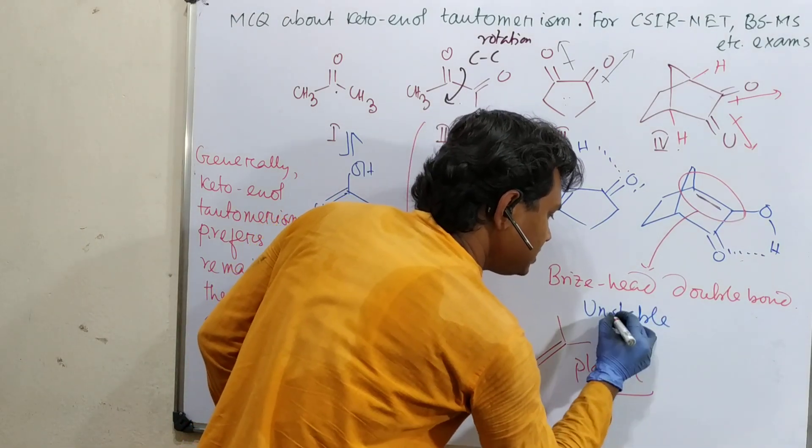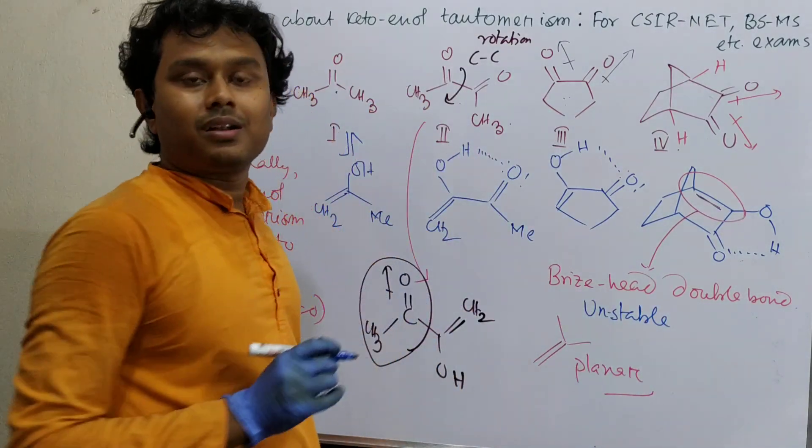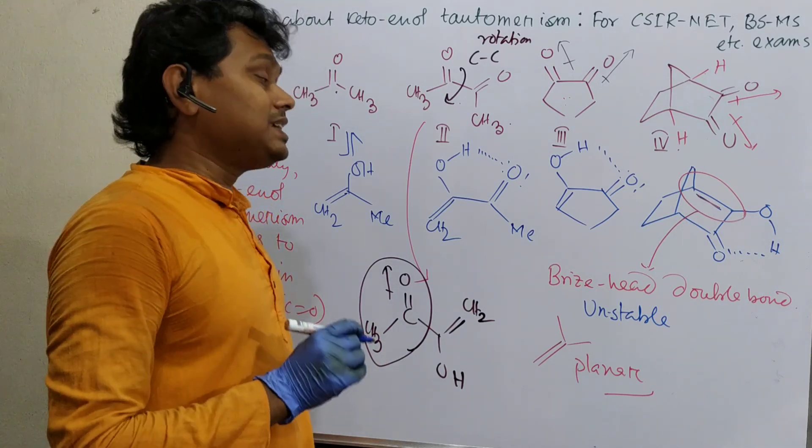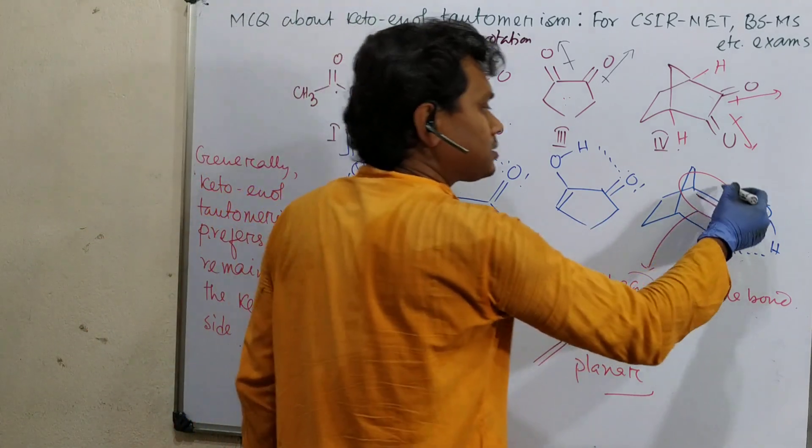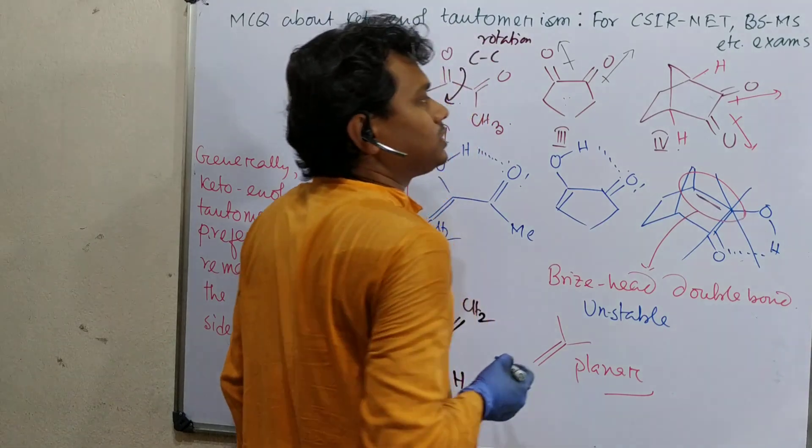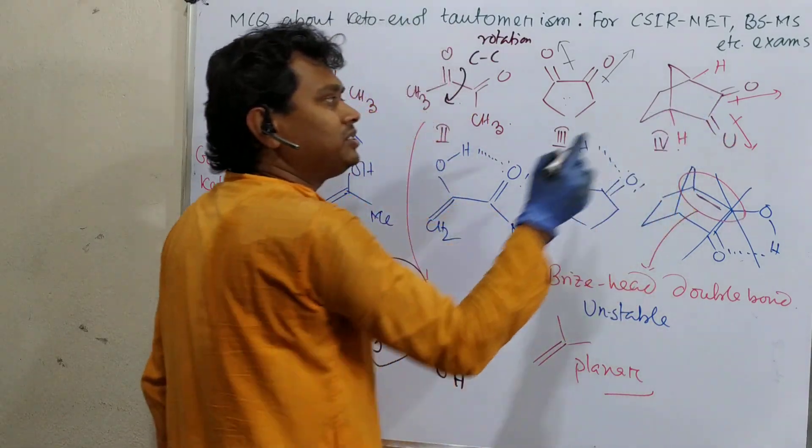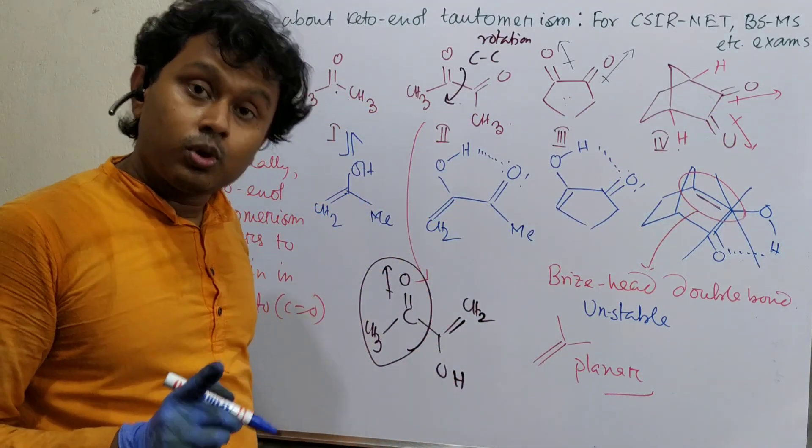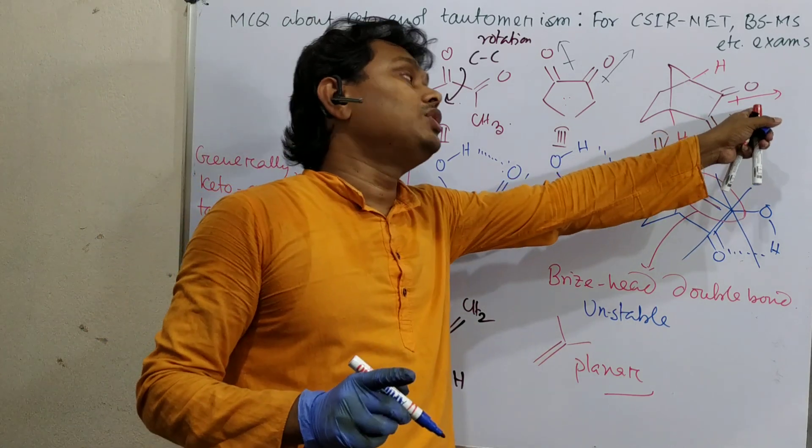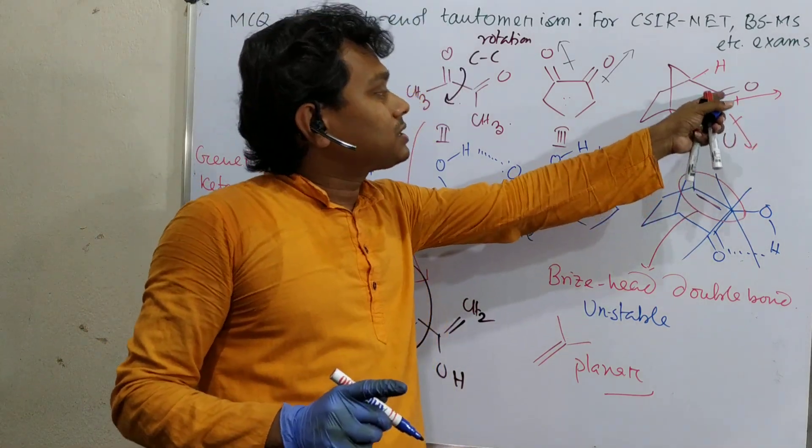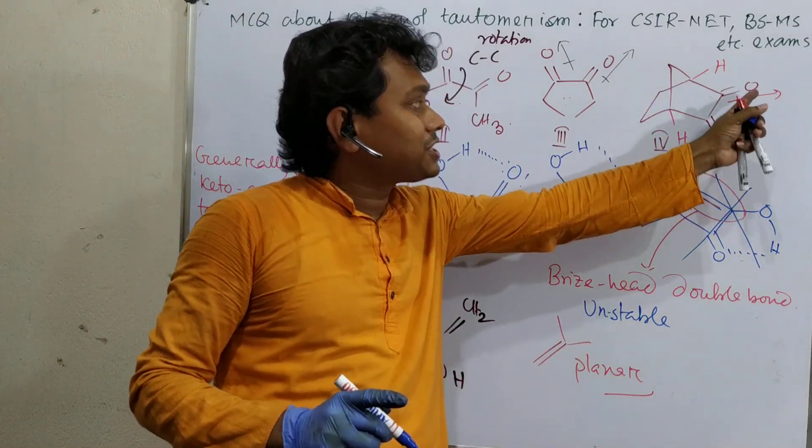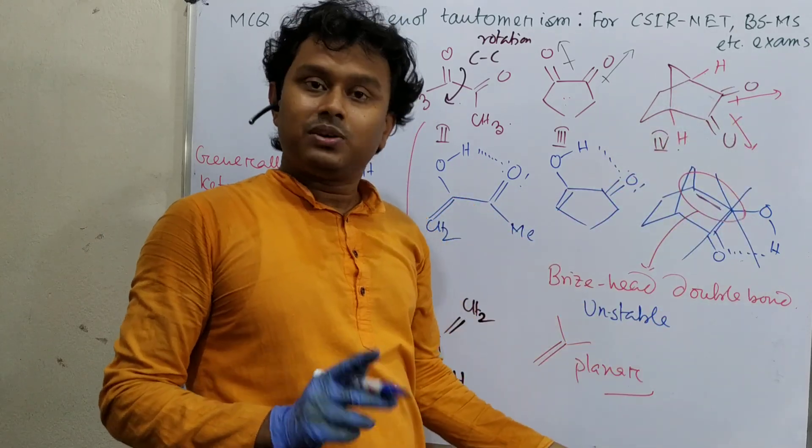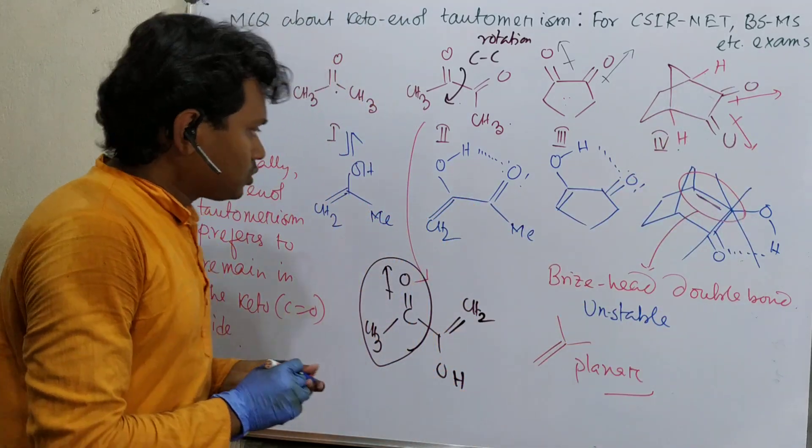So you are introducing additional instability. These bridgehead double bonds are unstable. Because of this instability, it will not undergo tautomerism. That is the reason this form will not exist actually. It will entirely remain in the keto form, although it has 1,2-dipolar interaction and the ketos are on the same side.